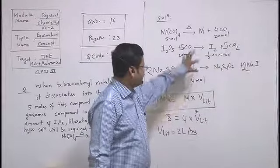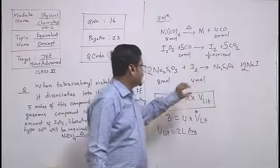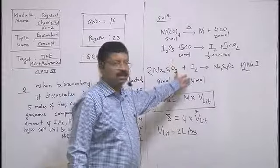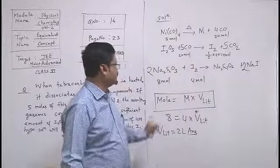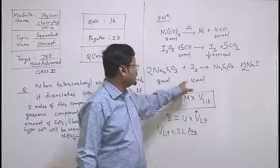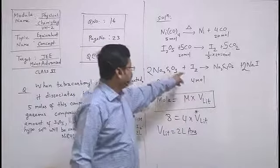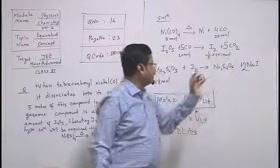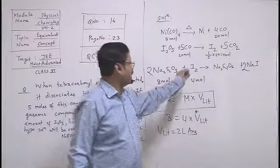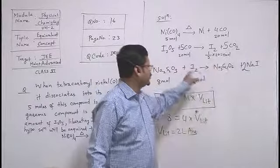First you have to find this. After that, however many equivalents are there, equivalents of this will equal equivalents of that. The moles and N-factor - what is the N-factor here? I2 is going from 0 to minus 1.